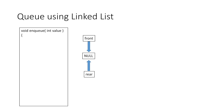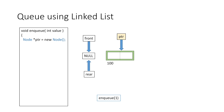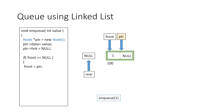Now let's implement our enqueue function. Initially the queue is empty and both front and rear are null. When we enqueue the value 1, we first create a new node and store its address in pointer ptr — say at address 100. We set the data part of ptr to 1 and its link part to null. Since front is equal to null, this is the first node, so we make both front and rear equal to ptr.